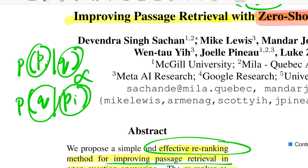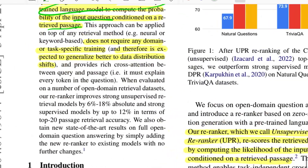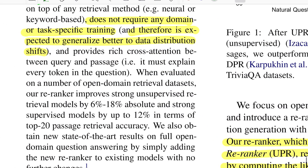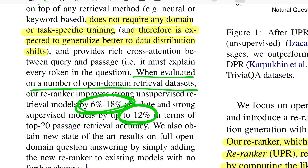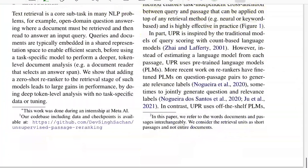In terms of performance, when evaluated on a number of open-domain retrieval datasets, their re-ranker improves strong unsupervised retrieval methods by 6 to 18 percent absolute, and by 12 percent over supervised models, when calculated for top-20 passage retrievals.